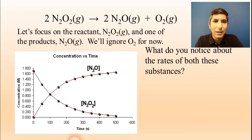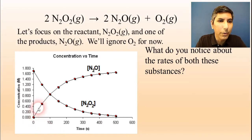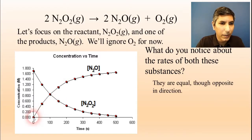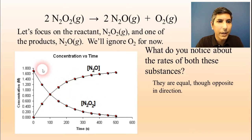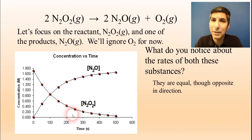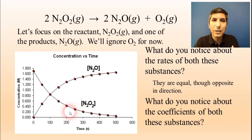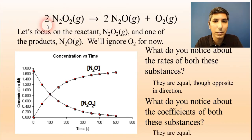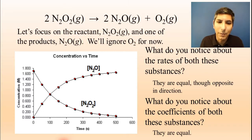What do you notice about the rates of both of those substances? One thing that may seem a bit peculiar is that both curves pretty much look the same — the only difference is they're going in opposite directions. Essentially, N₂O goes up at pretty much the same rate at which N₂O₂ goes down. Is that a coincidence? If we look at the balanced equation and the coefficients, the coefficient of N₂O is 2, which is the same as the coefficient for N₂O₂. These are equal coefficients, and this tells us something about the rates.